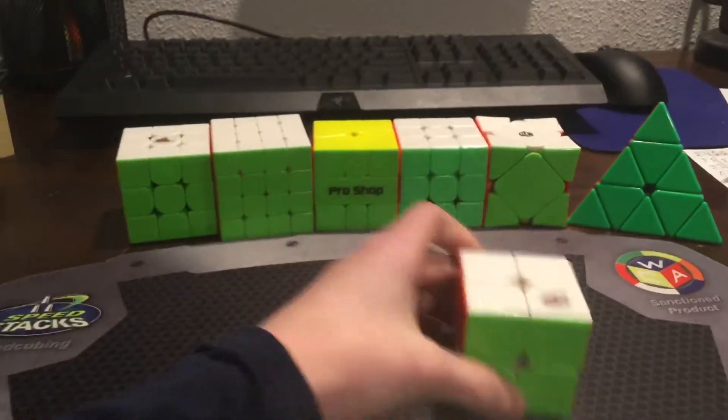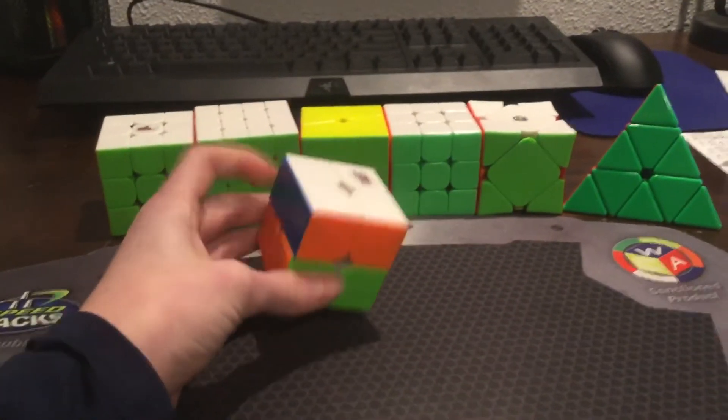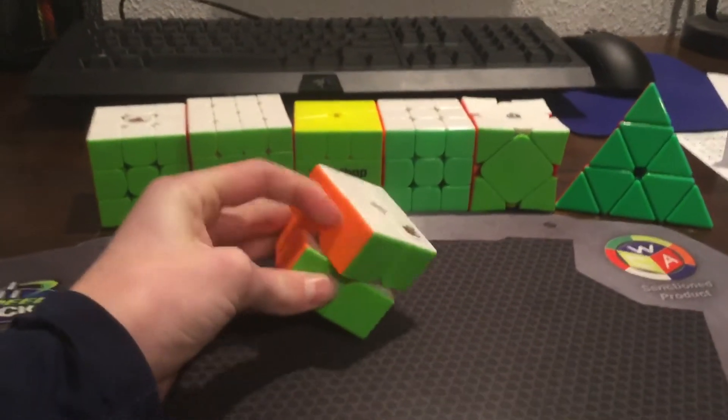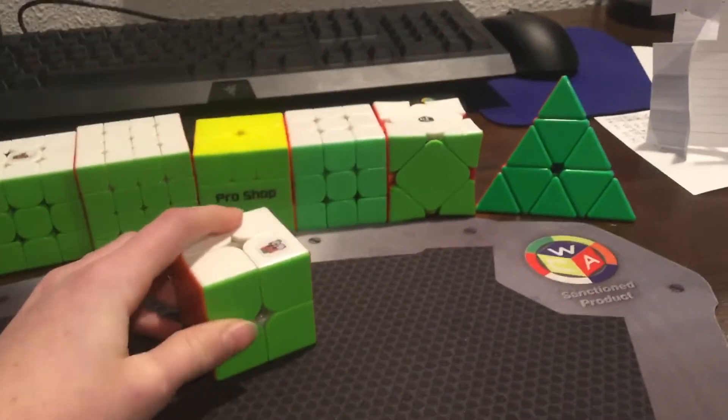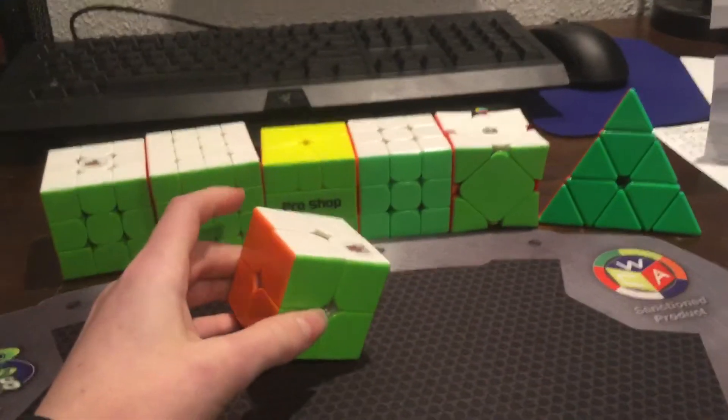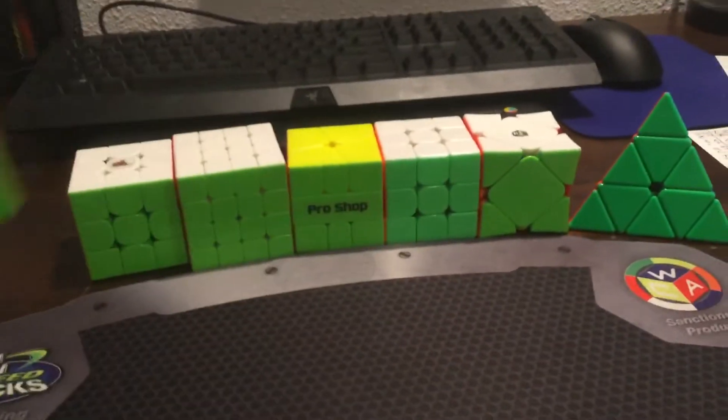Starting with 2x2. This is the Angstrom Volk 2M from TheCubicle.com. My goal is to get a sub-3.5 average, make finals, and maybe even podium. But I'm not sure, there's a lot of good 2x2 solvers in Minnesota.